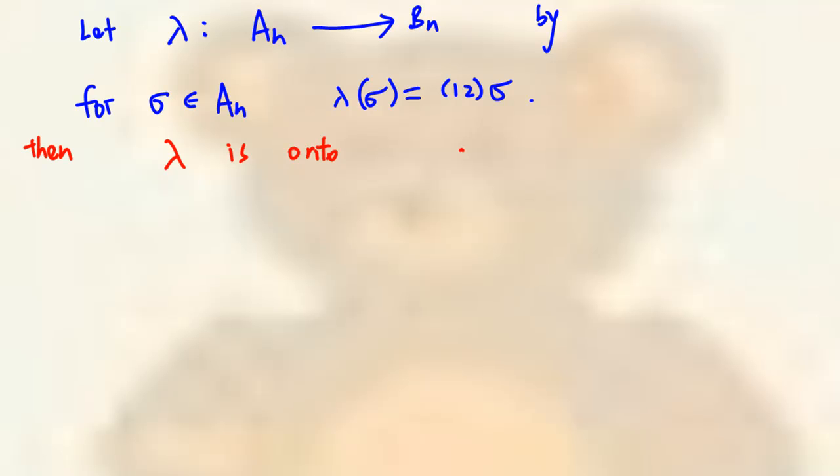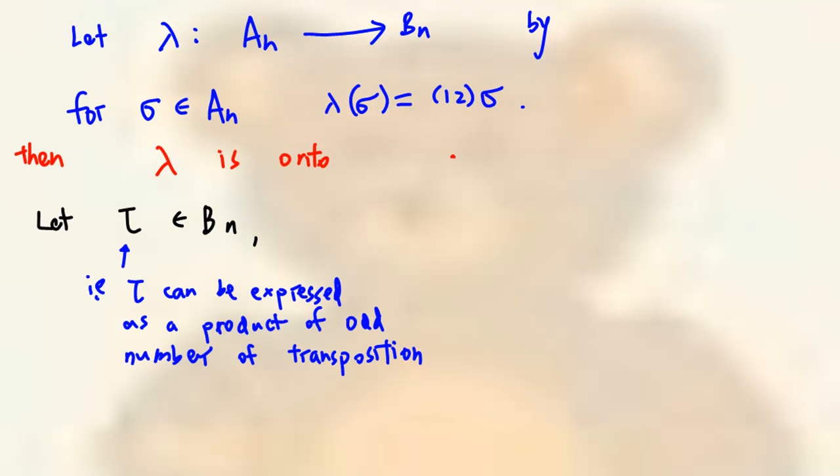Next, we will show that the mapping lambda is onto. Let tau be an element in B sub n. That means, tau can be expressed as a product of odd number of transposition.